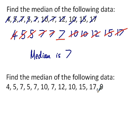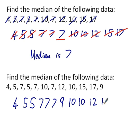I start exactly the same, writing them out in order of size. Now there's a 9 that's appeared, 2 tens, 12, 15, and 17. Exactly the same as before, cross them off one by one from each end.